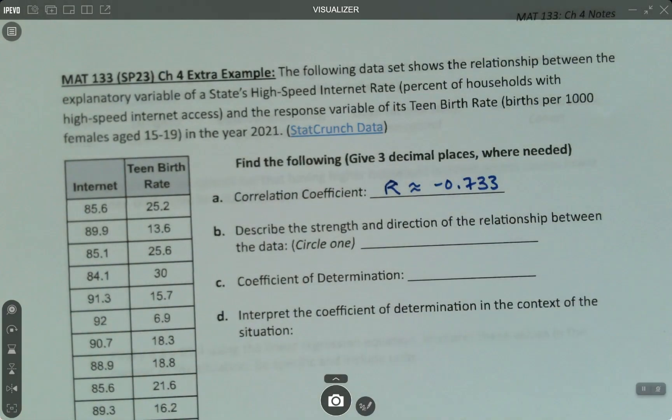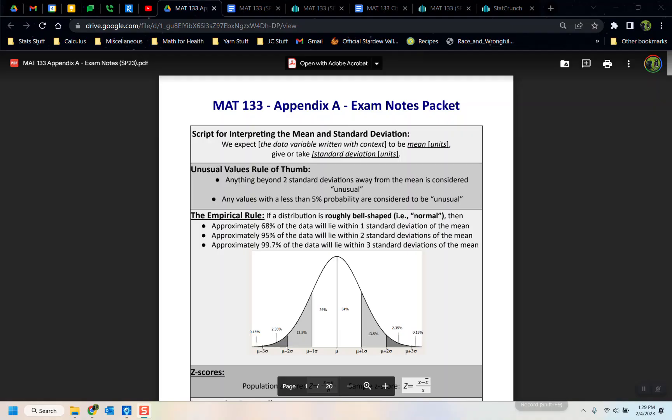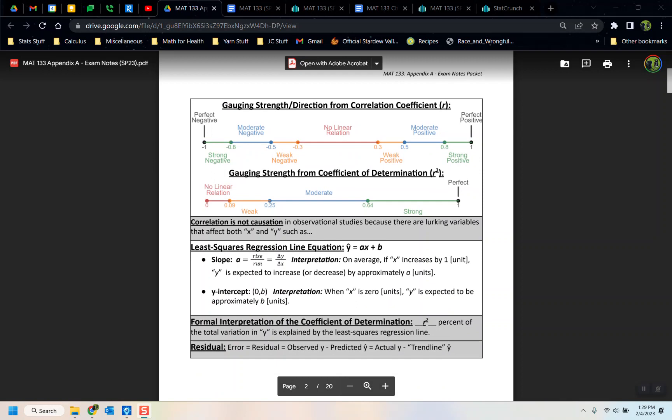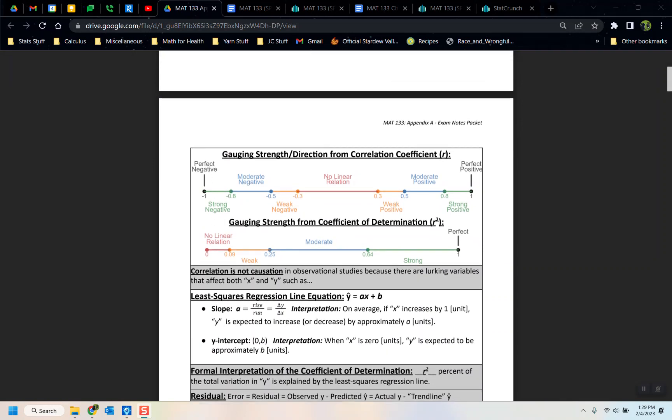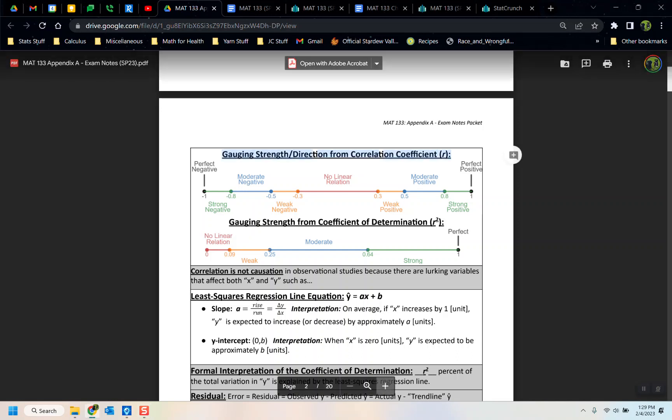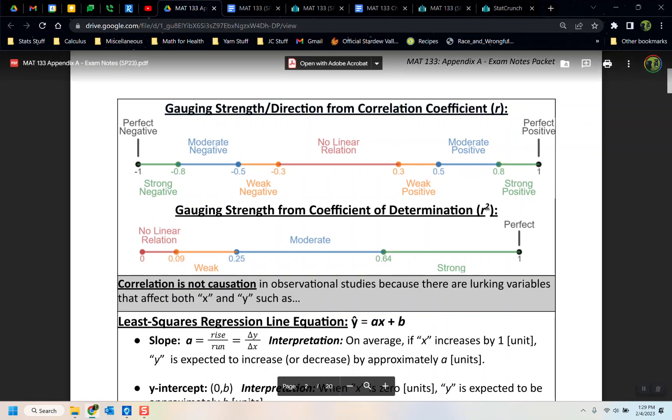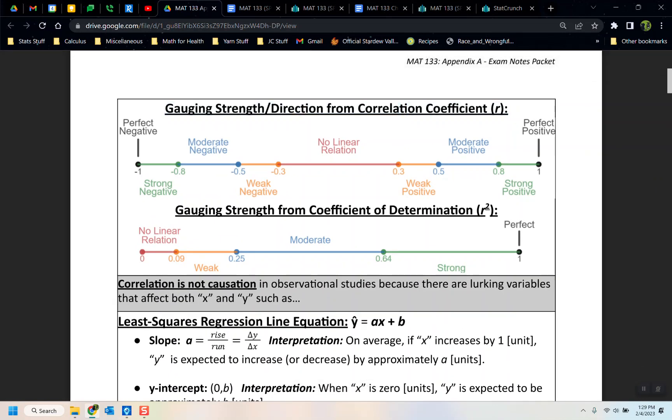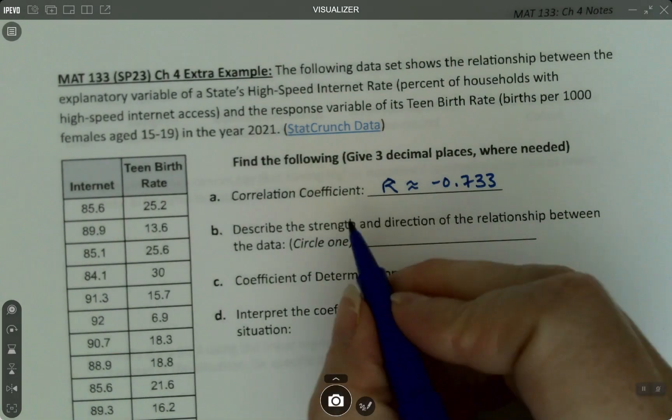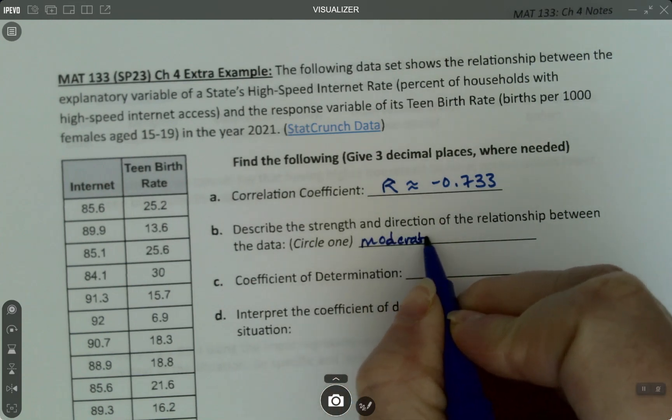Now the strength and direction. For that, we need to go to the exam notes packet and look at the graph for R. Here's the exam notes packet. So it's the yellow packet. That's the color I usually make it. And so we want to look here at the strength of this correlation coefficient. Let me zoom in a little bit so we can see it better. R value is negative. So we know we're on the negative side. And it's negative 0.733. So that's in the moderate negative zone, because 0.7 is between 0.5 and 0.8. So it's a moderate negative relationship.